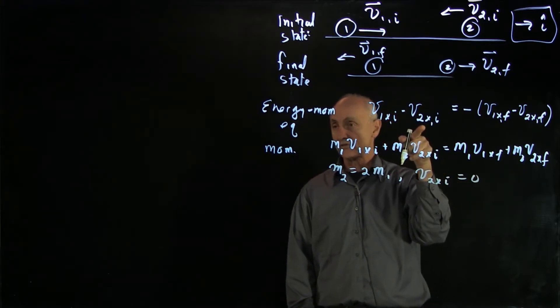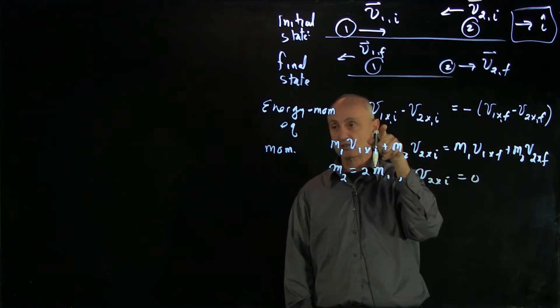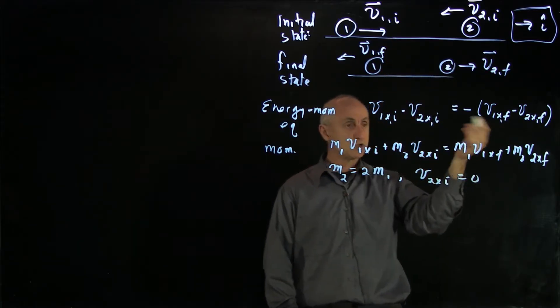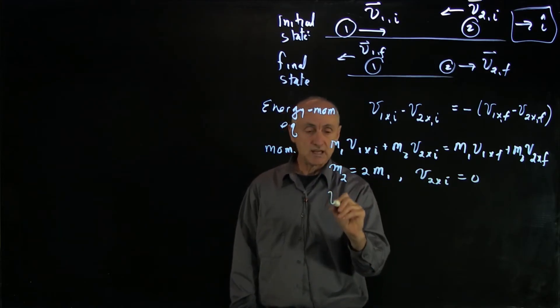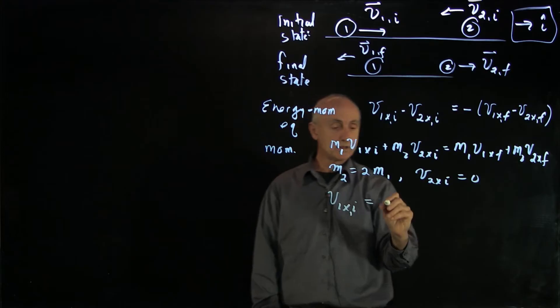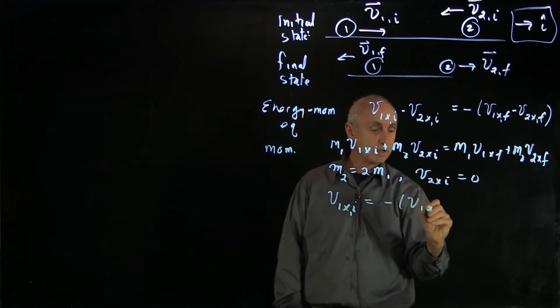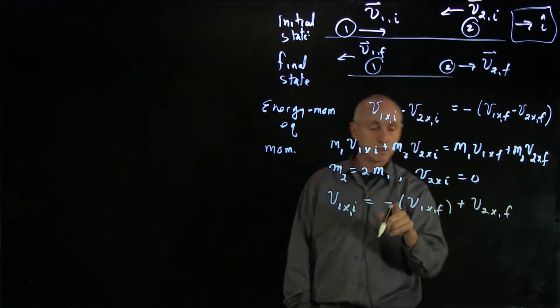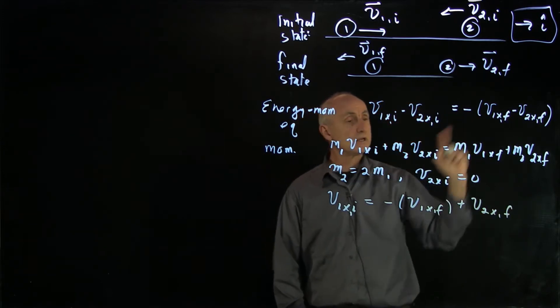And that tells us that the initial relative velocity is simply the velocity of object 1. So let's just write our two equations down again and see how much simpler our system is. v1 x initial is minus v1 x final plus v2 x final.